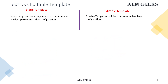In case of static templates, to store template-level properties we use the design node. But the design node has been completely removed with editable templates — instead, we use policies in editable templates to store template-level properties. Policies also give you a few additional features and functionalities, which I'll cover in a separate tutorial. So now you should understand why we need editable templates and what issues we were facing with static templates.